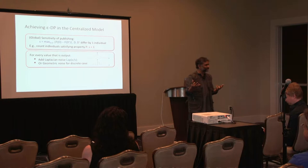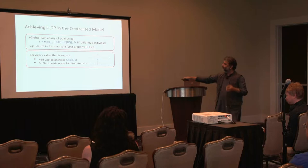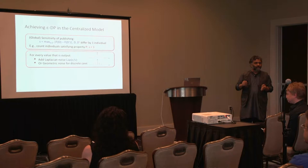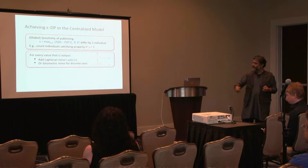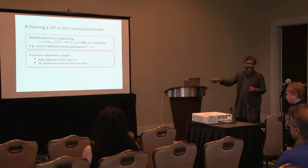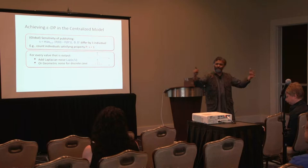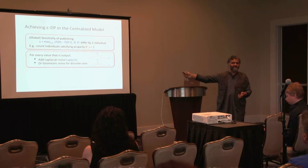Given the sensitivity, the idea is to add noise that is somehow proportional to the sensitivity. If the sensitivity is low, you can add a small amount of noise. If the sensitivity is high, you have to add a high amount of noise to hide the presence or absence of an individual. One technique is to add Laplacian noise with a parameter of epsilon divided by the sensitivity. A discrete version of this is geometric noise. With mean 0, you can add positive or negative noise — if sensitivity is 1, you might add plus or minus 1 with higher probability, plus or minus 2 with lower probability, and so on.